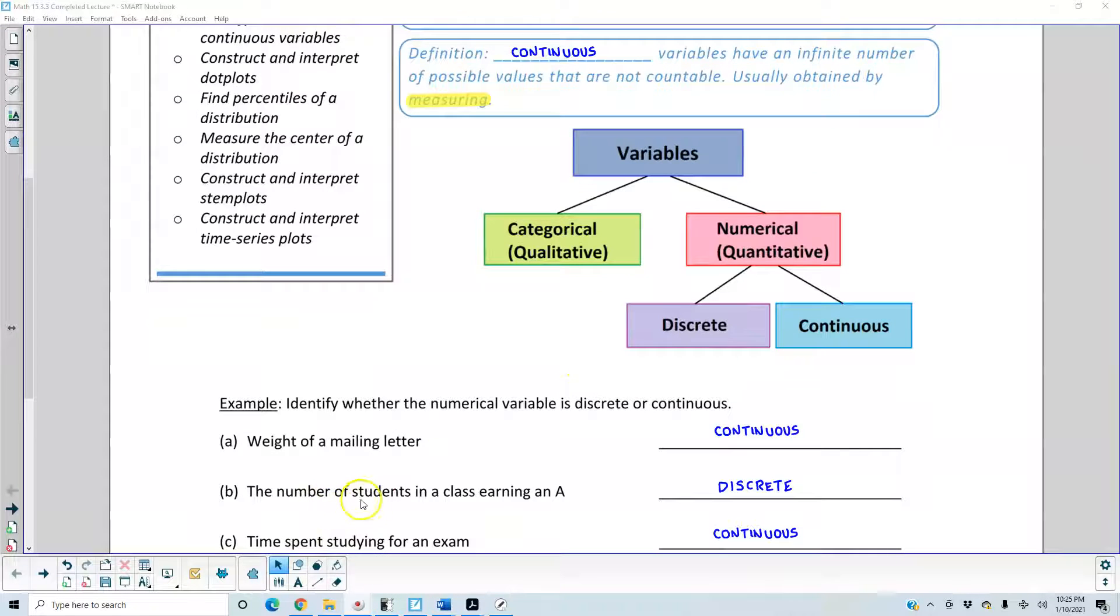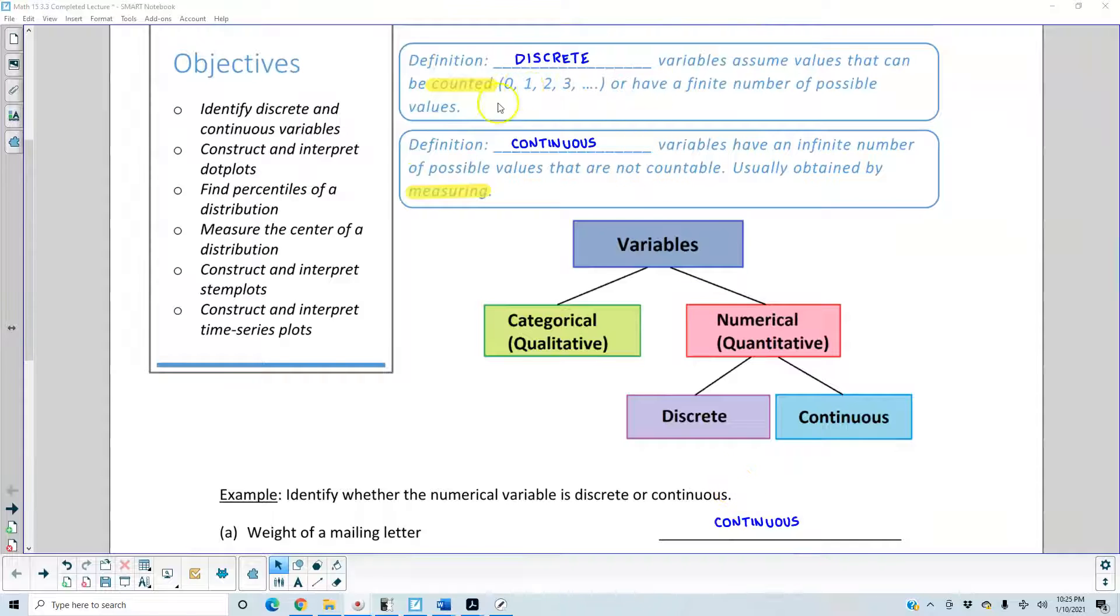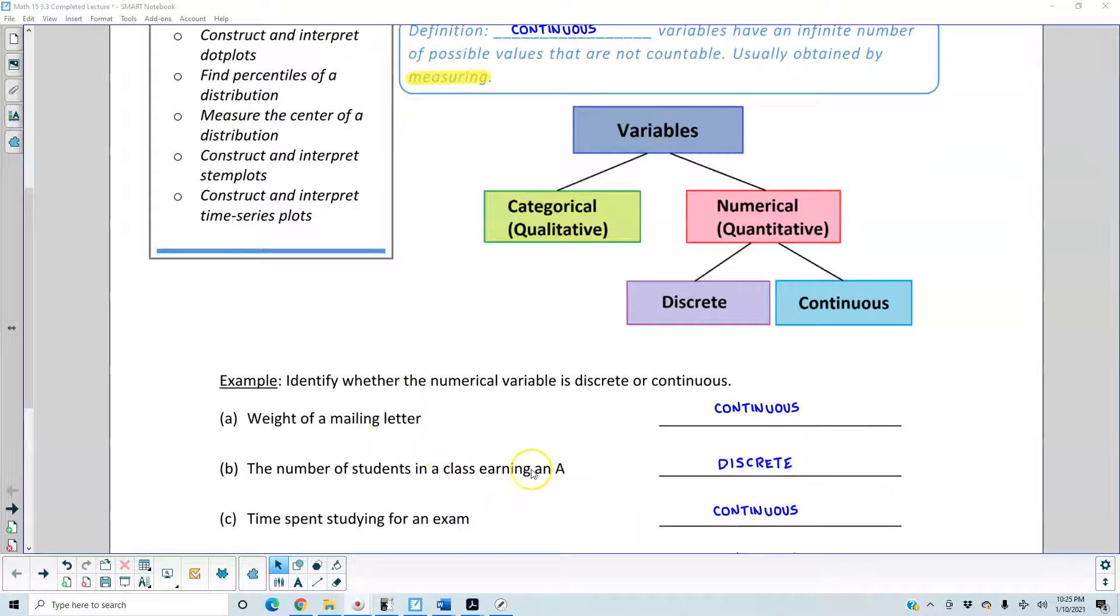Part B: The number of students in a class earning an A. This is discrete because it is countable. We can count the number of students in a class that are earning an A.